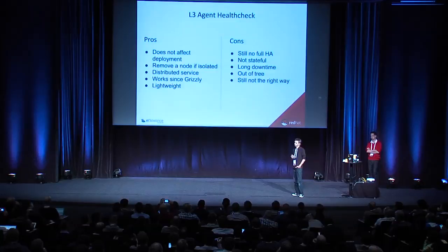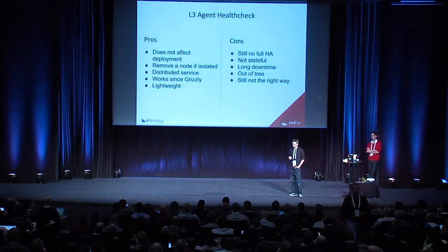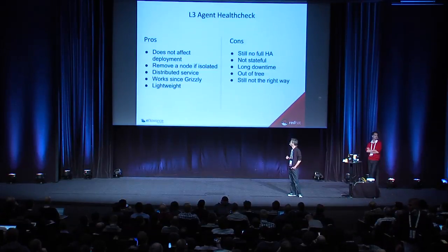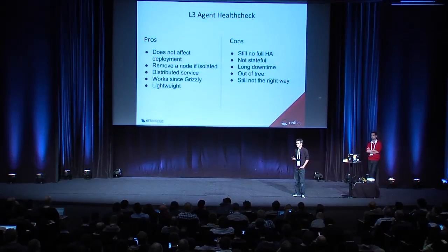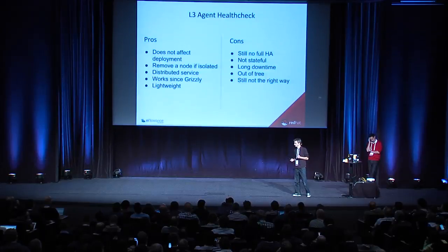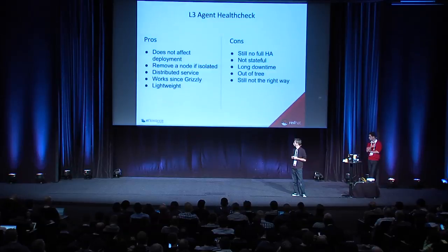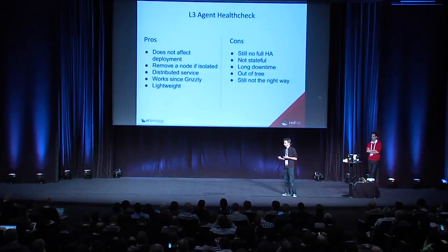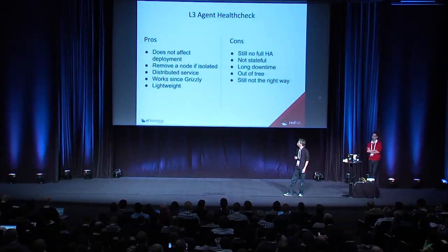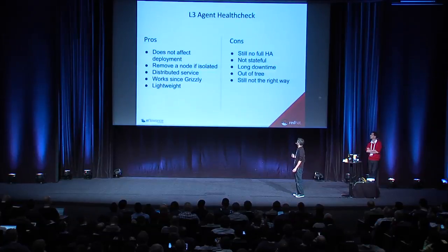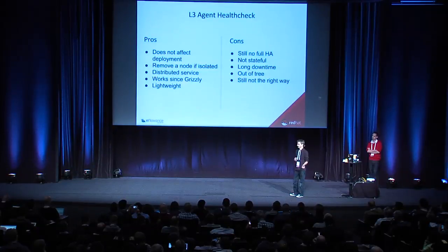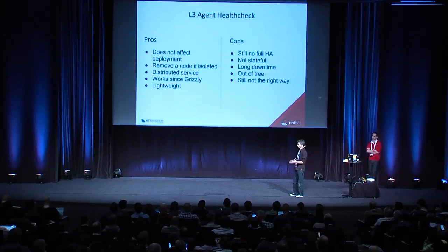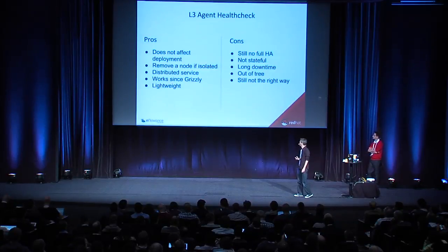The pros: it does not affect your current deployment, so you can use it right now on your Icehouse architecture. It is able to remove a node if it is isolated — there's a ping mechanism to detect isolation from an external point of view. It can handle migration, it is a distributed service with no single point of failure, it works in Grizzly, and it is quite lightweight. The cons: it is still not full HA since there is no stateful handling. Migration is quite long depending on the number of virtual routers. It is not an official OpenStack project — it is open source, on Innovance's GitHub — but it is not the right way to achieve HA.